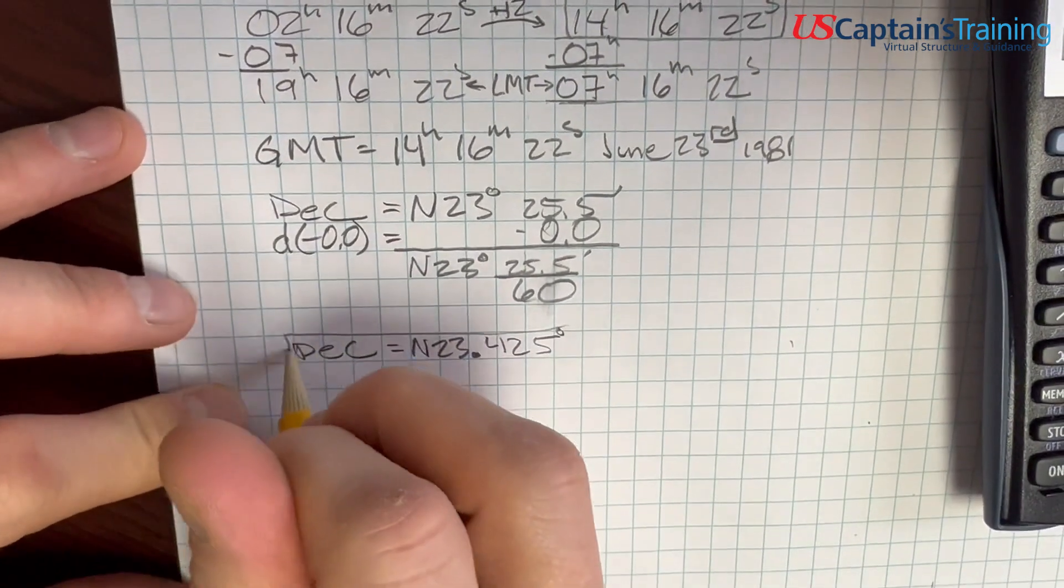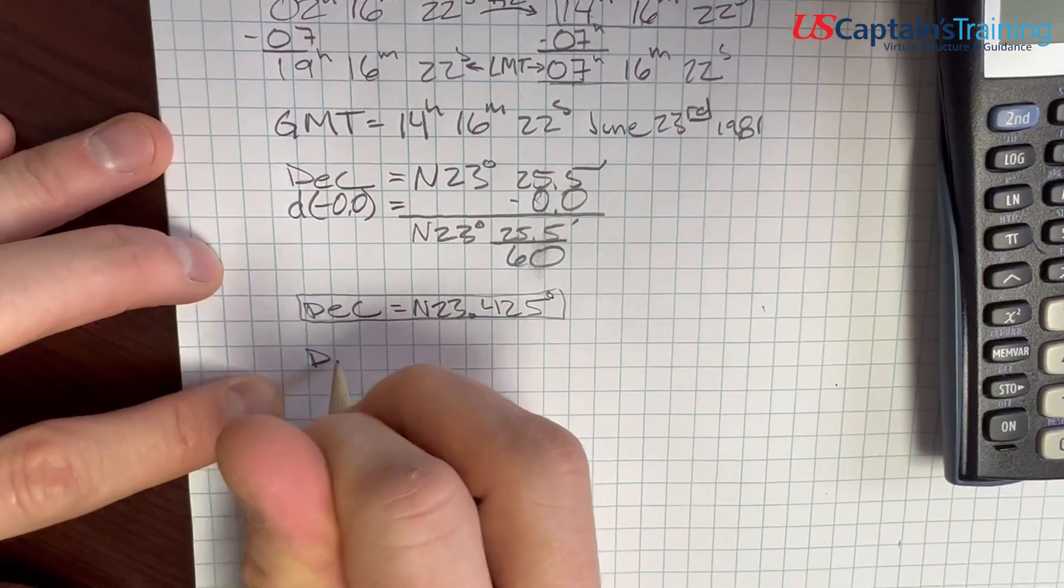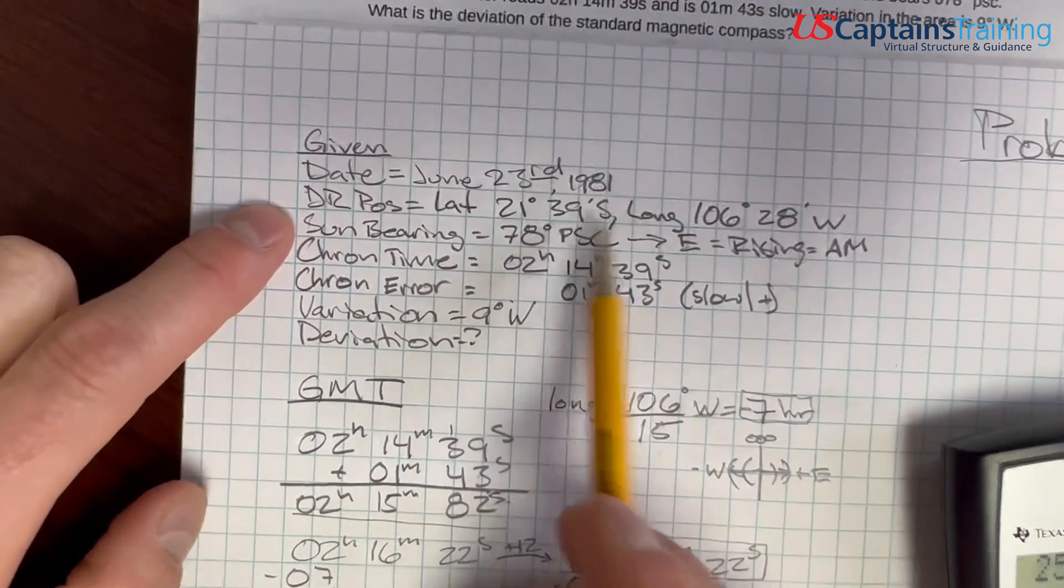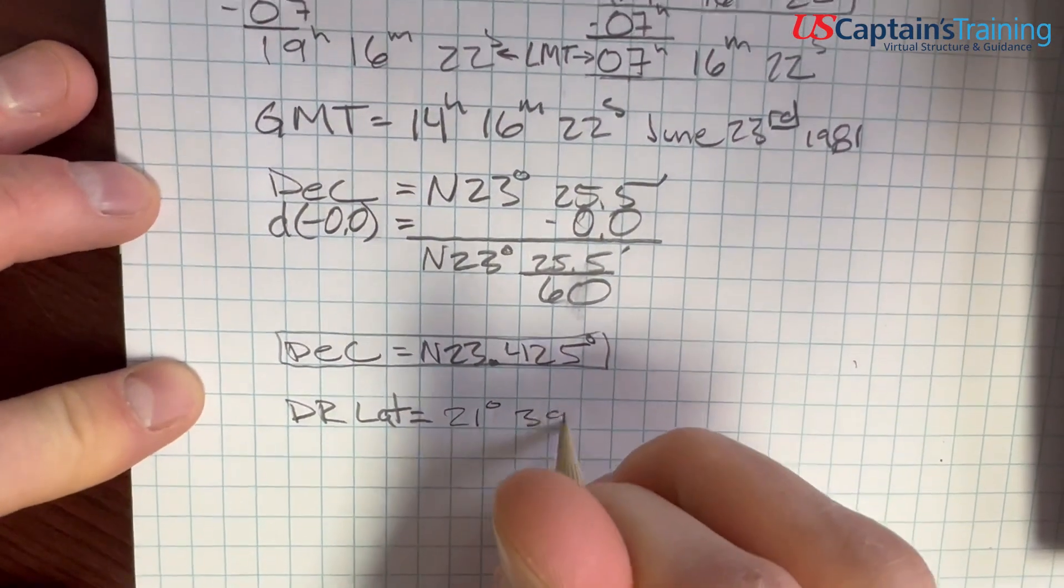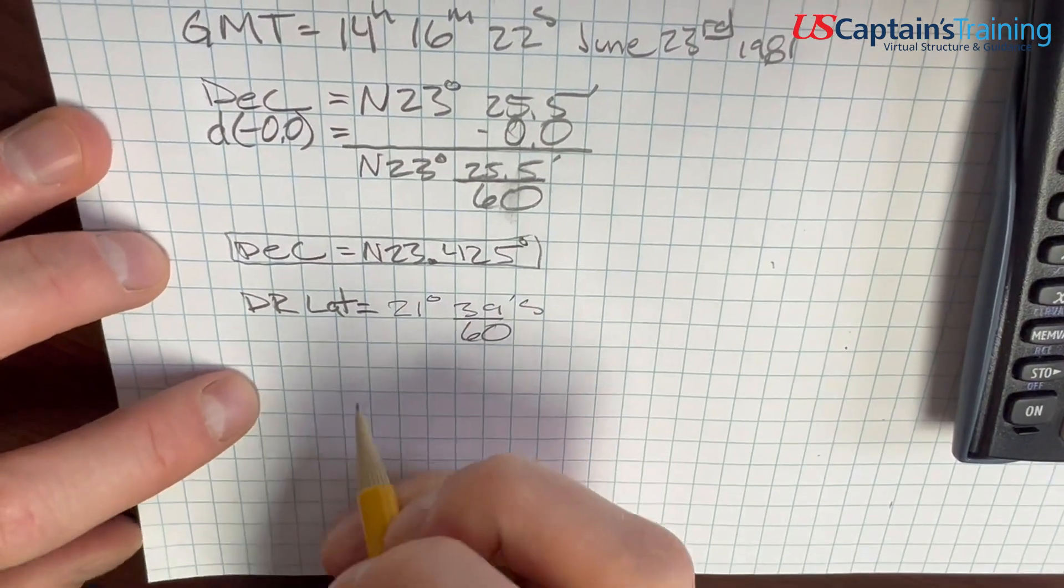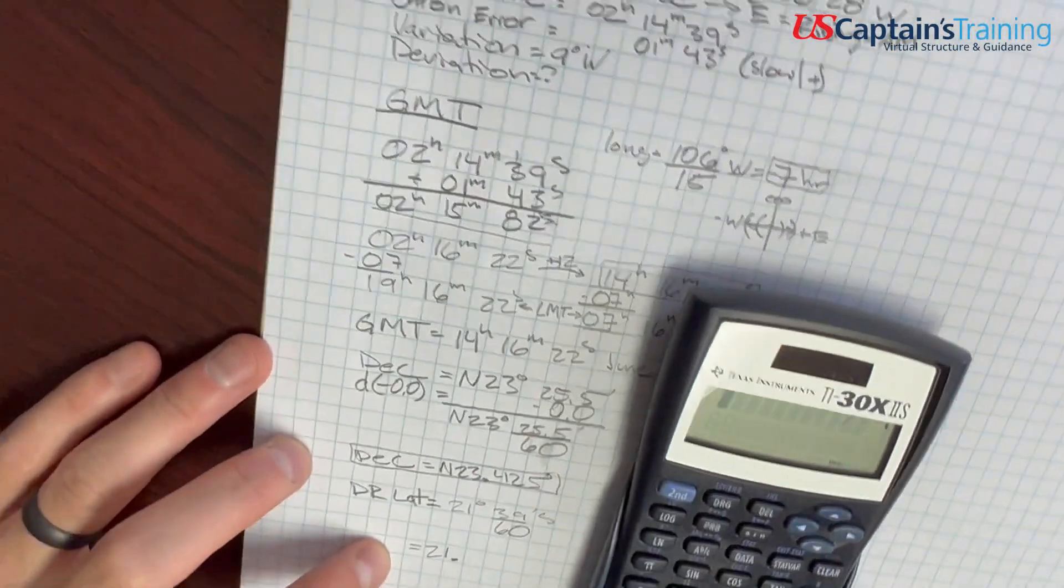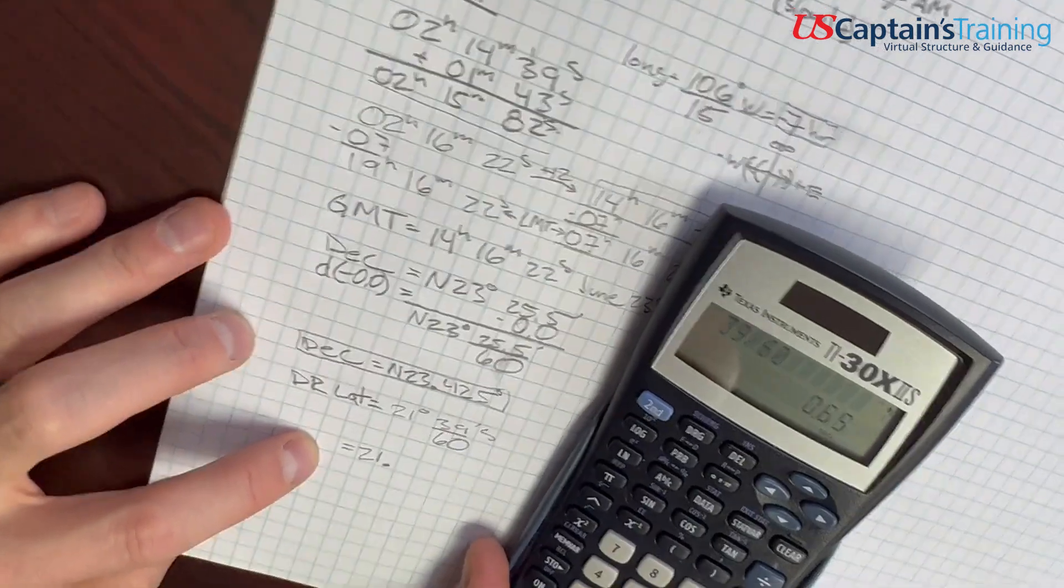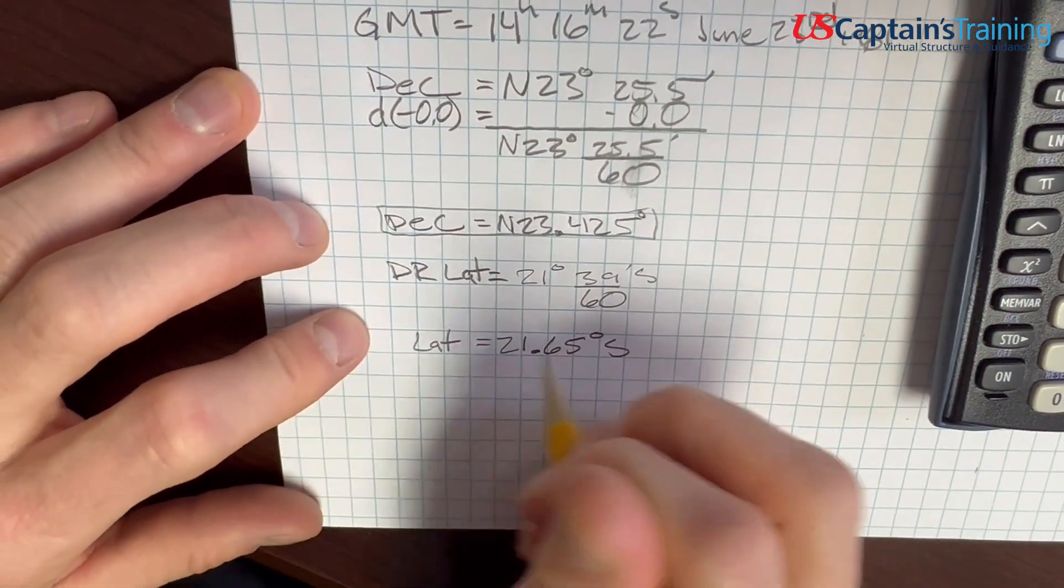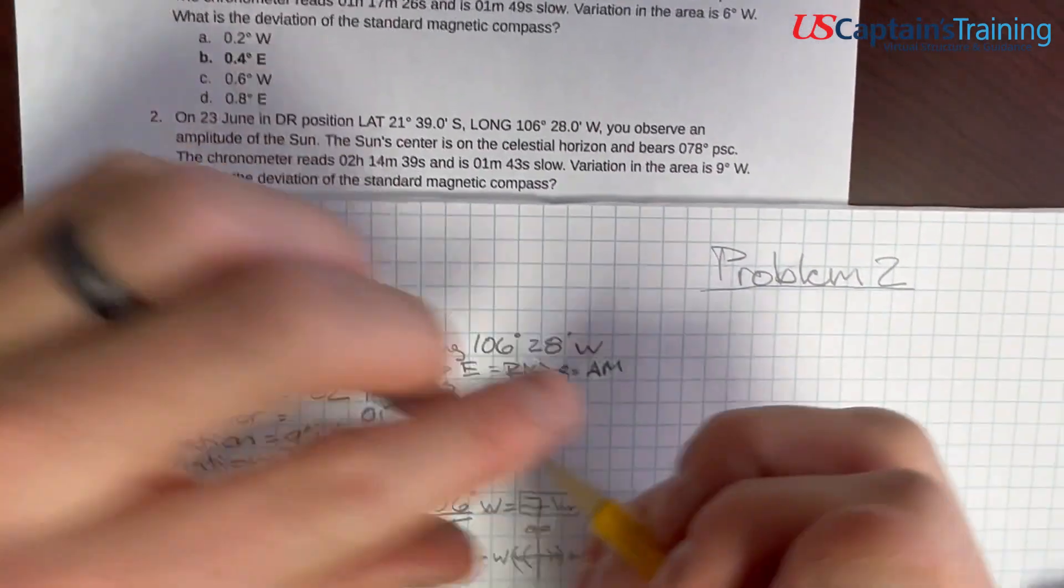And now we get our latitude, our DR latitude. DR latitude is equal to 21 degrees 39 minutes south. We take these 39 minutes and divide them by 60. 39 divided by 60 equals 0.65, so 21.65 degrees south. This is our latitude that we're going to use. And now we can plug these in to our formula to get amplitude.